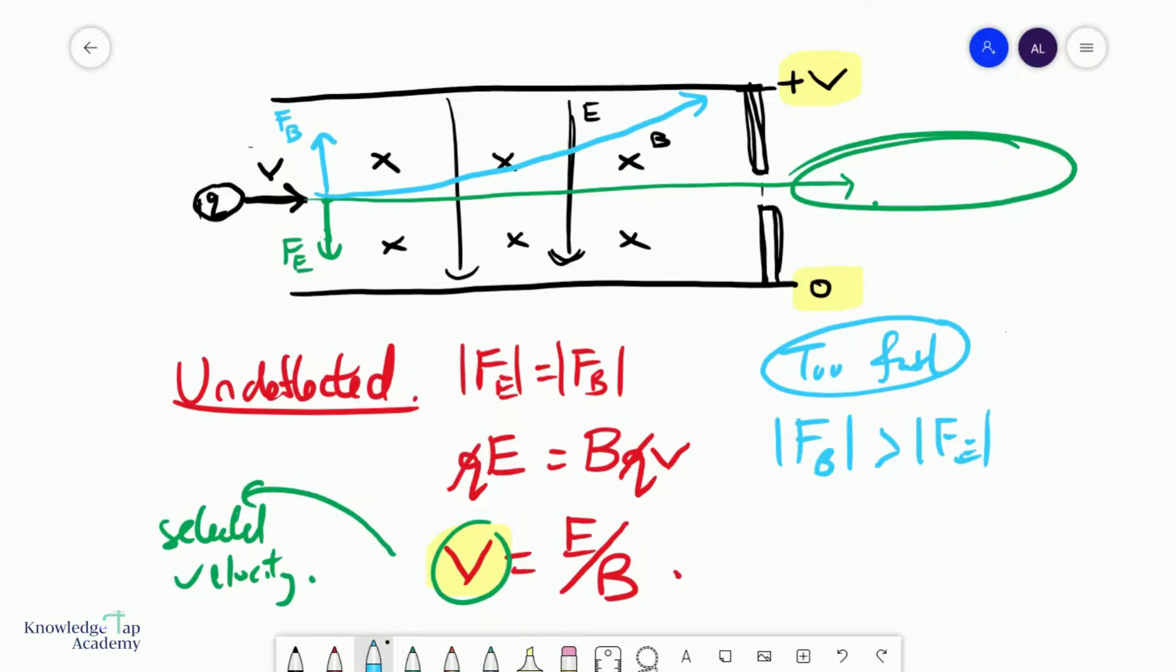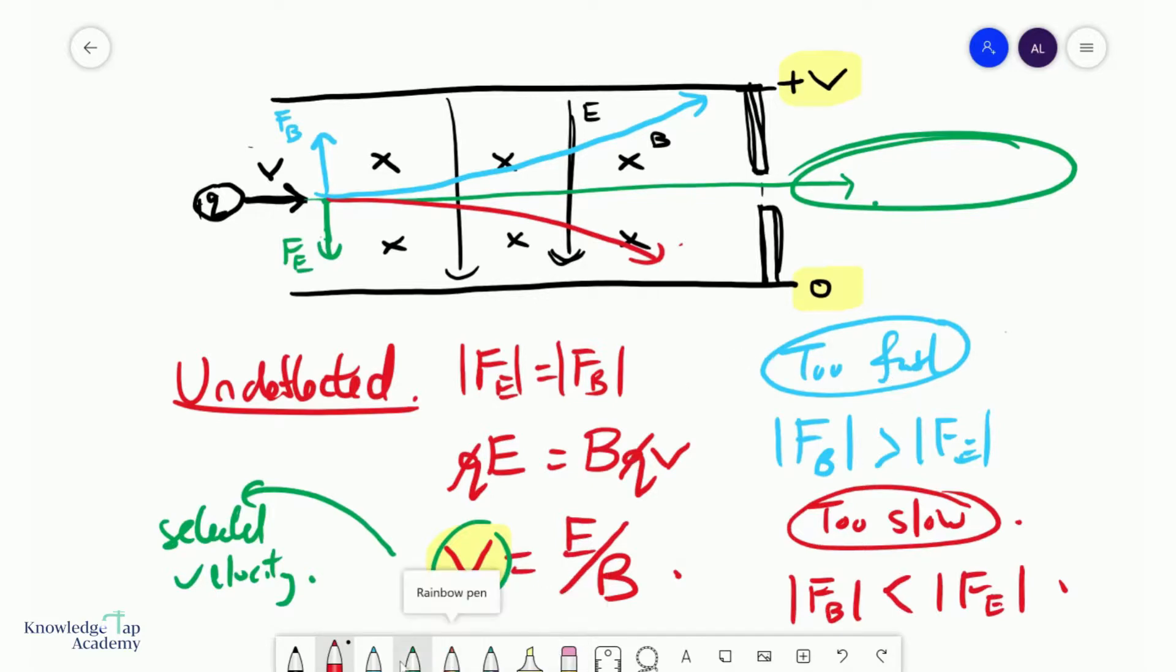Similarly, if the velocity is slower than the velocity selected, then the opposite happens. FB is less than FE in magnitude, and you will deflect in the direction of FE, and again you will not be able to emerge from the velocity selector.